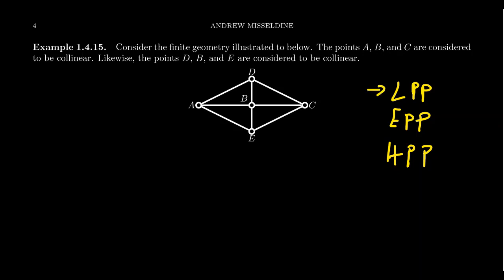LPP says that there are no parallel lines in your geometry. EPP says that parallel lines are unique. And HPP essentially says that there's a multiplicity in parallel lines.